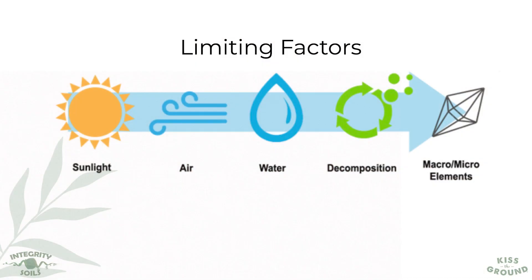Then we look at water. Most producers think that water is the number one factor to limiting or enabling growth, but actually it's number three. So what is happening with water movement? Do we see water on the surfaces? Is it moving down through that profile evenly?